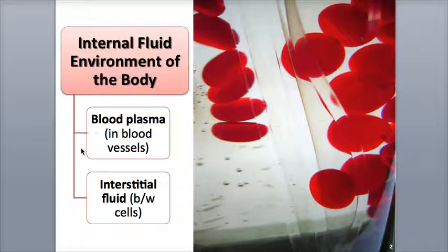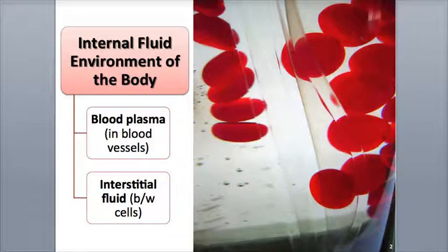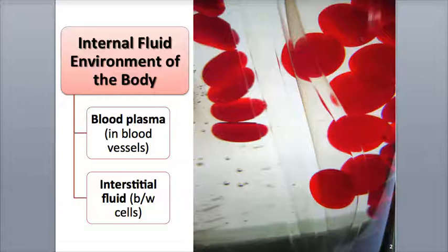Blood plasma found in the blood vessels and the interstitial fluid found between cells are two fluids that help supply the body cells with their essential materials, such as oxygen and nutrients, as well as help them get rid of wastes such as carbon dioxide. Blood is actually classified as a type of liquid connective tissue. All connective tissues consist of cells surrounded by an extracellular matrix, and blood is no exception. Blood cells are surrounded and suspended by a protein-rich liquid extracellular matrix that we know as blood plasma.